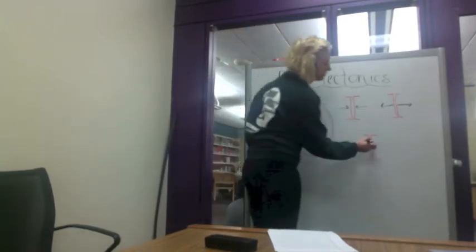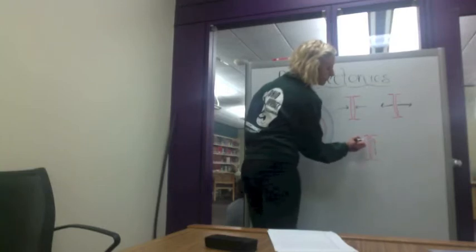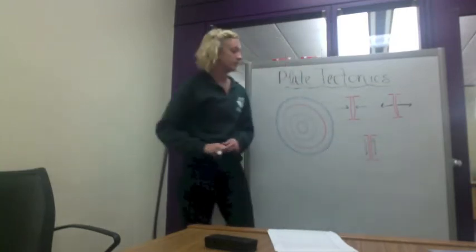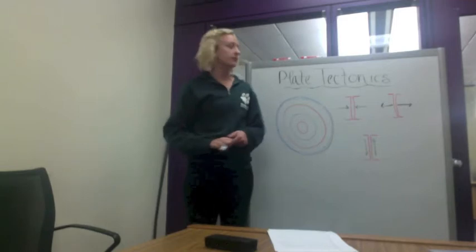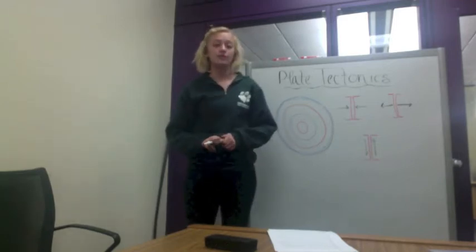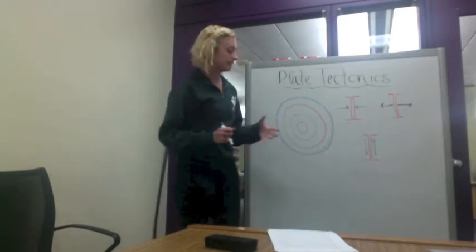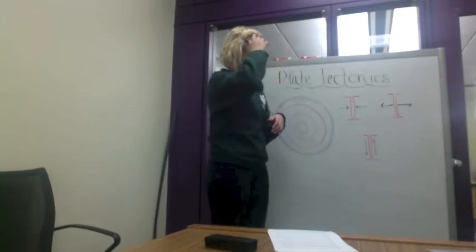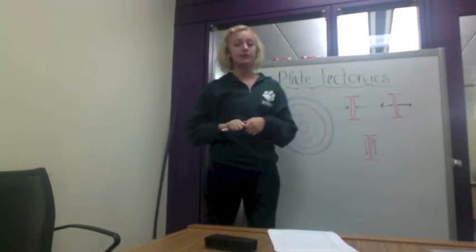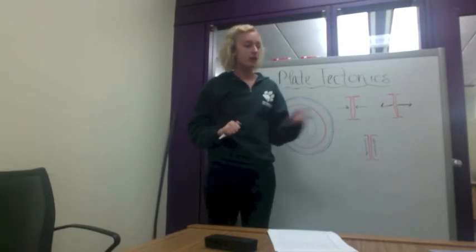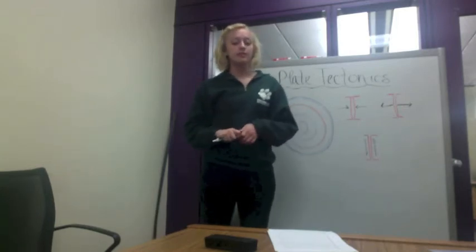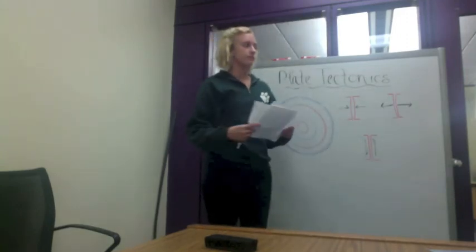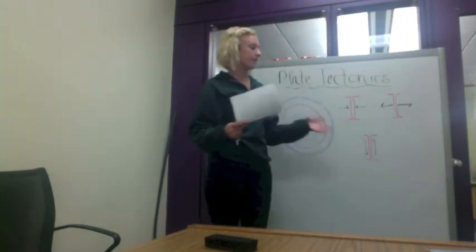The third type of boundary is known as transform. This is when plates are moving against and alongside each other. The most famous example would be the San Andreas fault out in California. Due to the grinding as the plates move like this against each other, it actually creates a lot of earthquakes. It's not visually dramatic on the surface of the Earth, but it does create a lot of different types of effects.